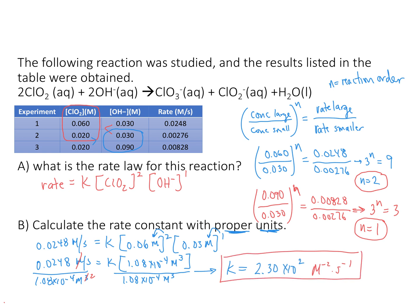So we found the rate law using the data table by observing how changes in concentration affect the rate. That gave us second-order for chlorine dioxide and first-order for hydroxide, making this overall third-order. Once we had the rate law, we found the rate constant. With the rate constant known, we can find the rate at any concentration of those species, or solve for a concentration given the rate.